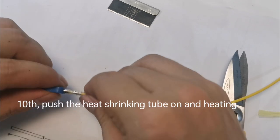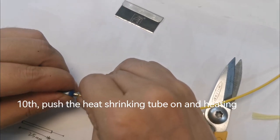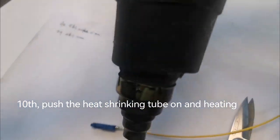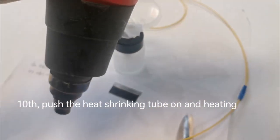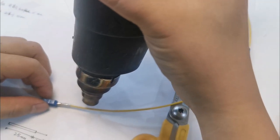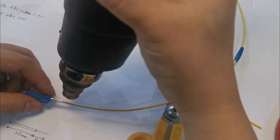After crimping, put on the heat shrink sleeve onto the crimping ring. Then use the heating gun to heat shrink.